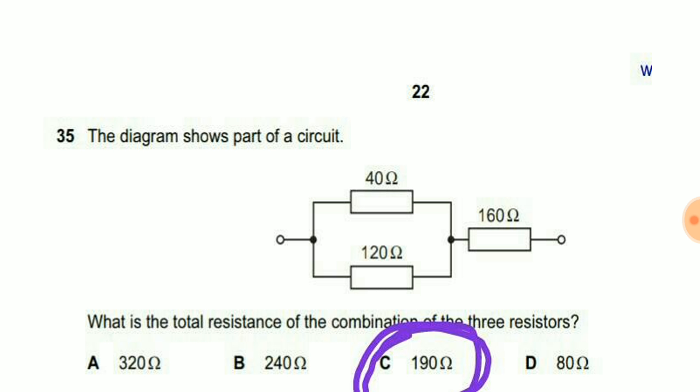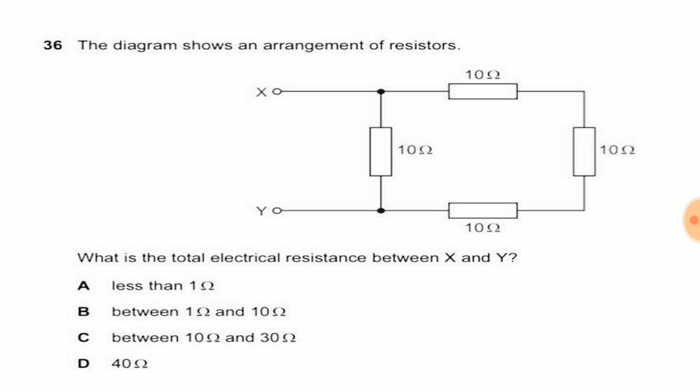Now let us move to question number 36. The diagram shows the arrangement of the resistors. Here are four resistors each having resistance 10 ohm. Now our task is to find the total electric resistance between X and Y.